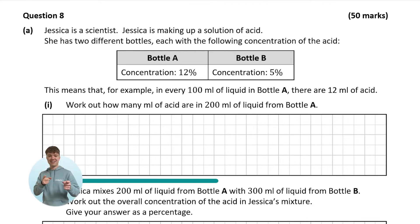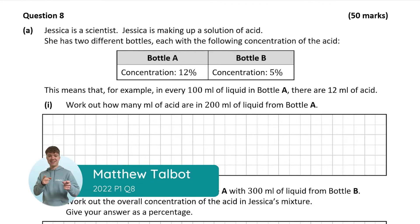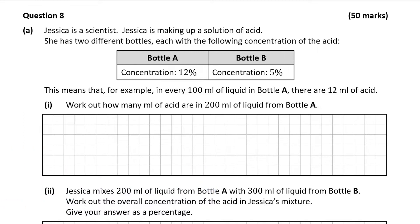It's Matthew here and we're going to be looking at question 8, which is a 50 mark question. So part A tells us that Jessica is making a solution of acid. She has two different bottles. Bottle A has concentration 12% and bottle B has concentration 5% of the acid.